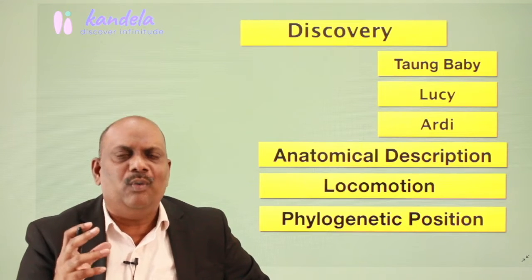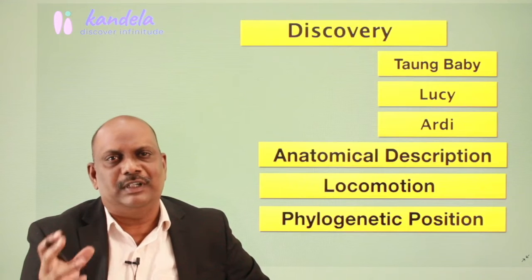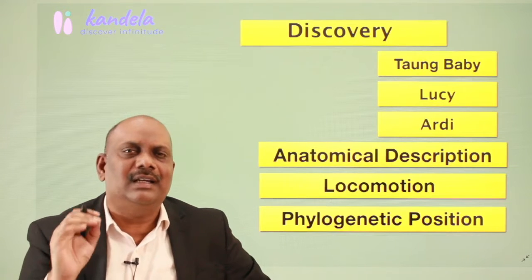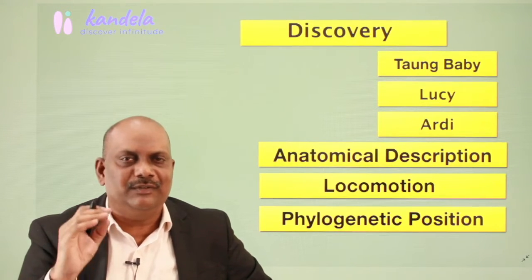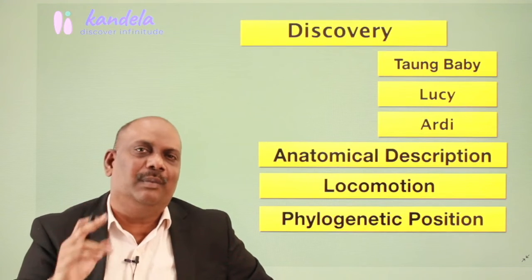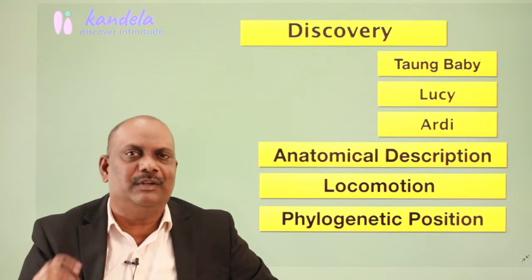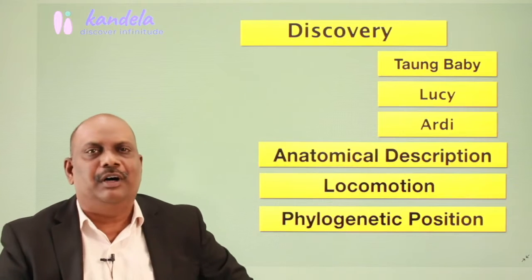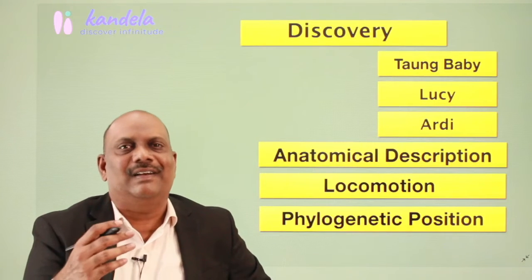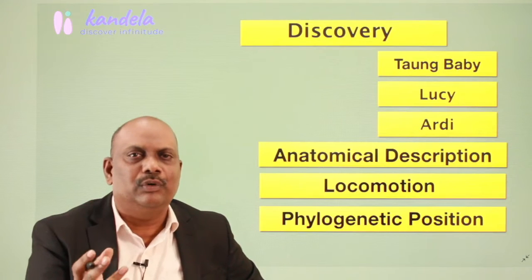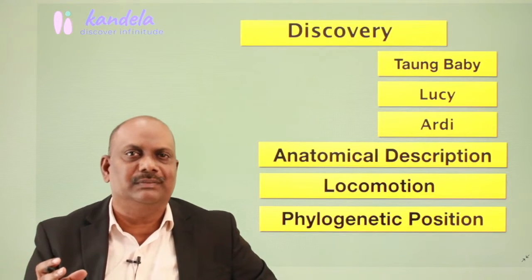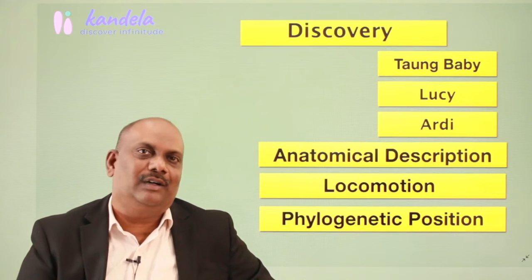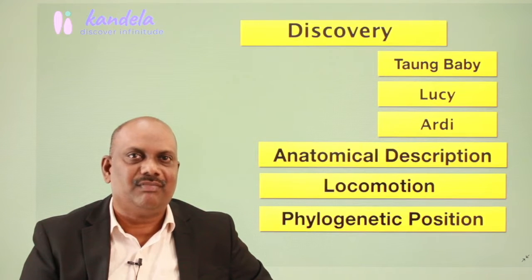Finally, we will discuss the phylogenetic position of Australopithecus — how and why we place this group of fossils in the line of human evolution, and what anatomical features clearly show that these hominids were in the line of human evolution. I will also be introducing a number of anatomical terms which are very important in understanding these human ancestors and these primates.